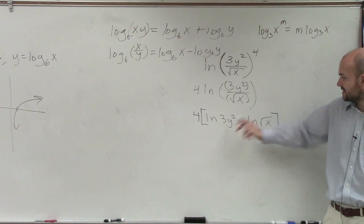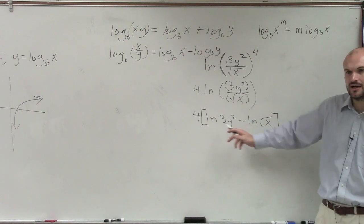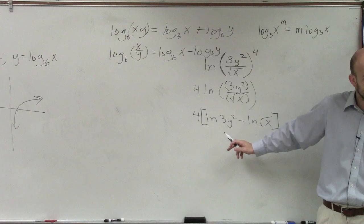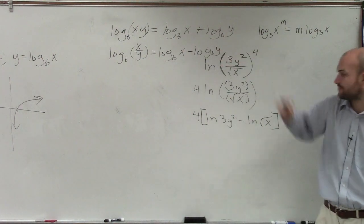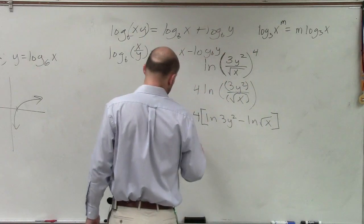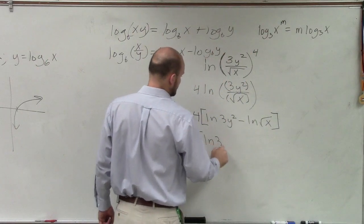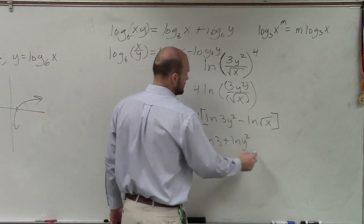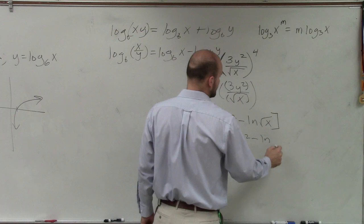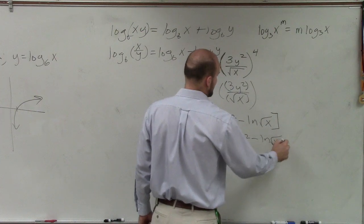Now I look at this and I say, all right, inside of here, I still have a multiplication. I can simplify this further, right? I can break this up by using my multiplication. So therefore, I have 4 bracket ln of 3 plus ln of y squared minus ln of square root of x.